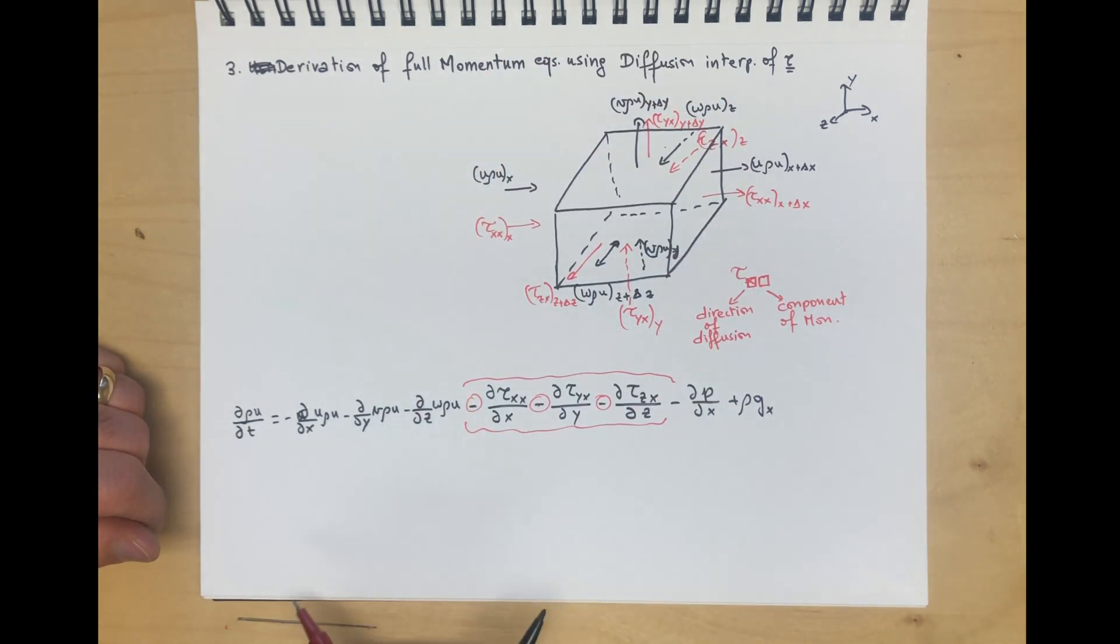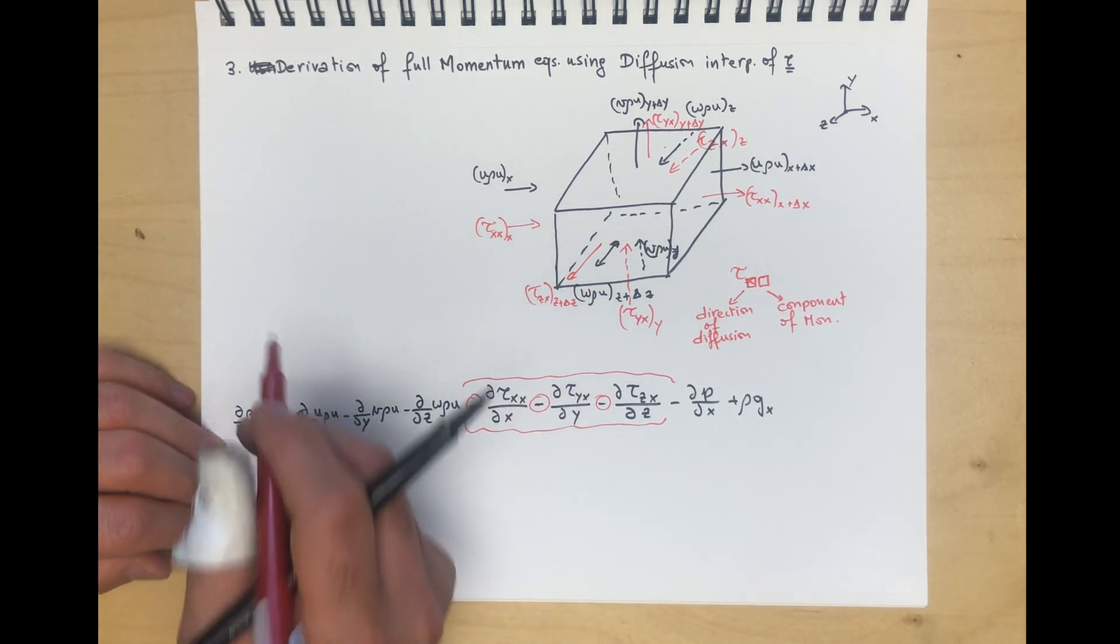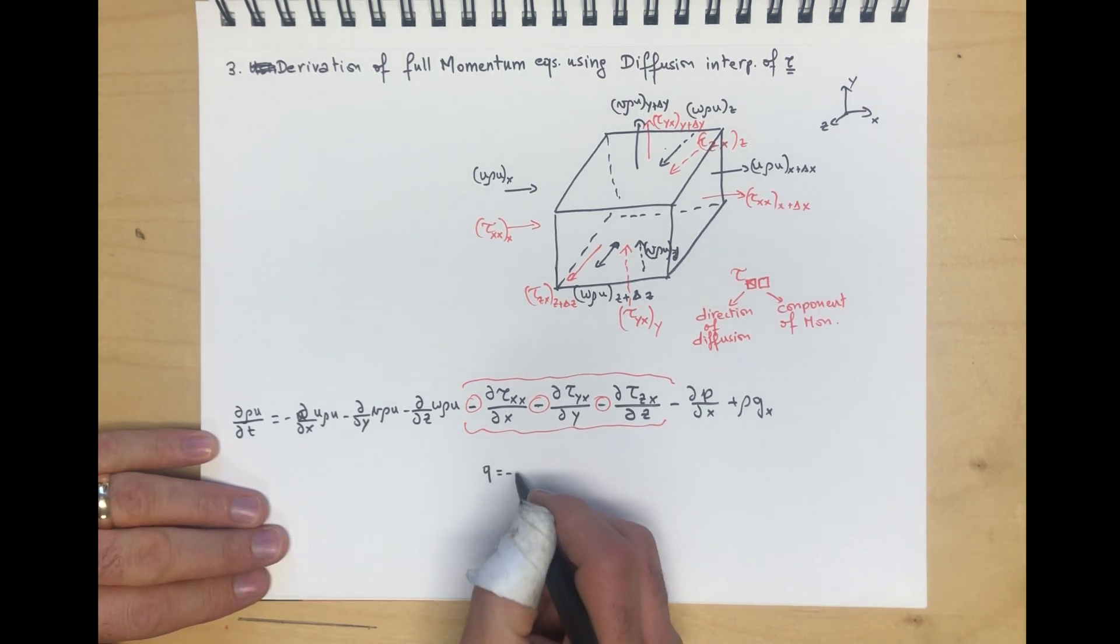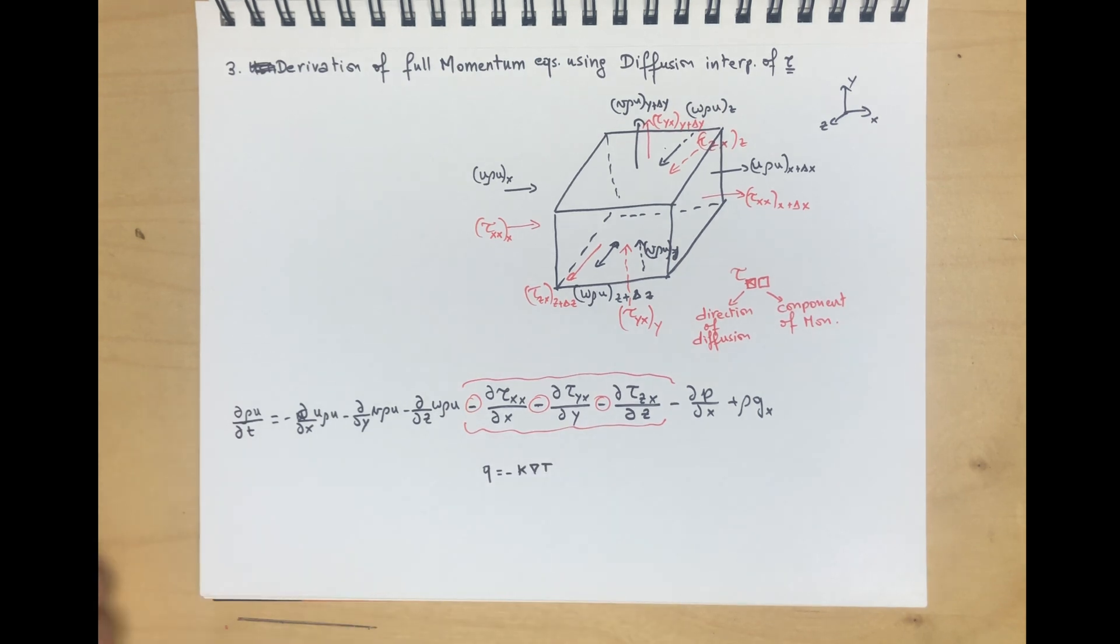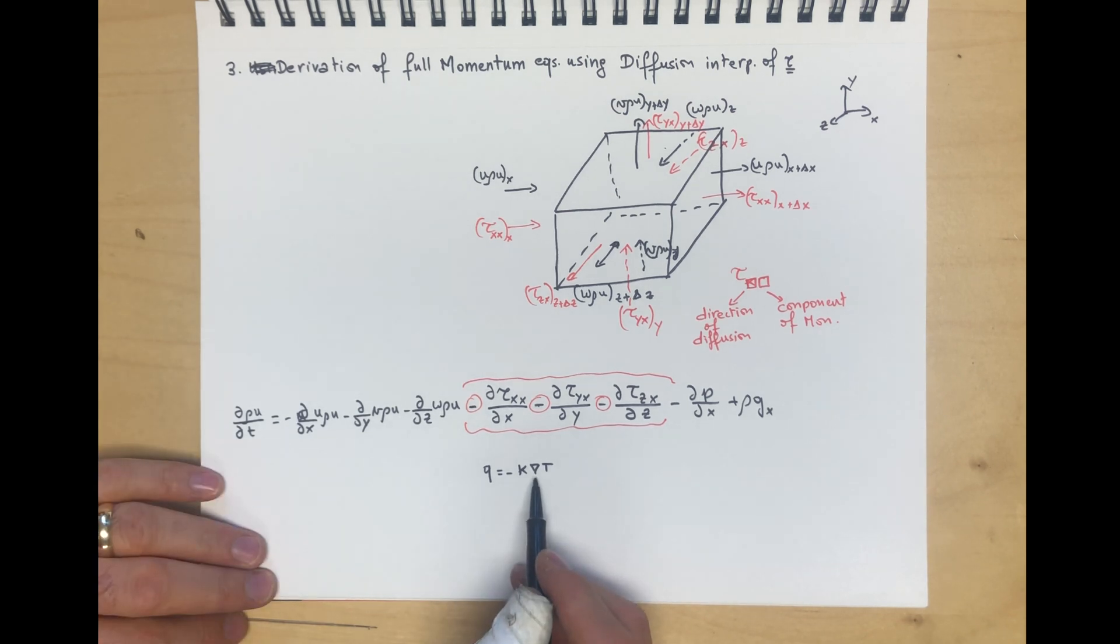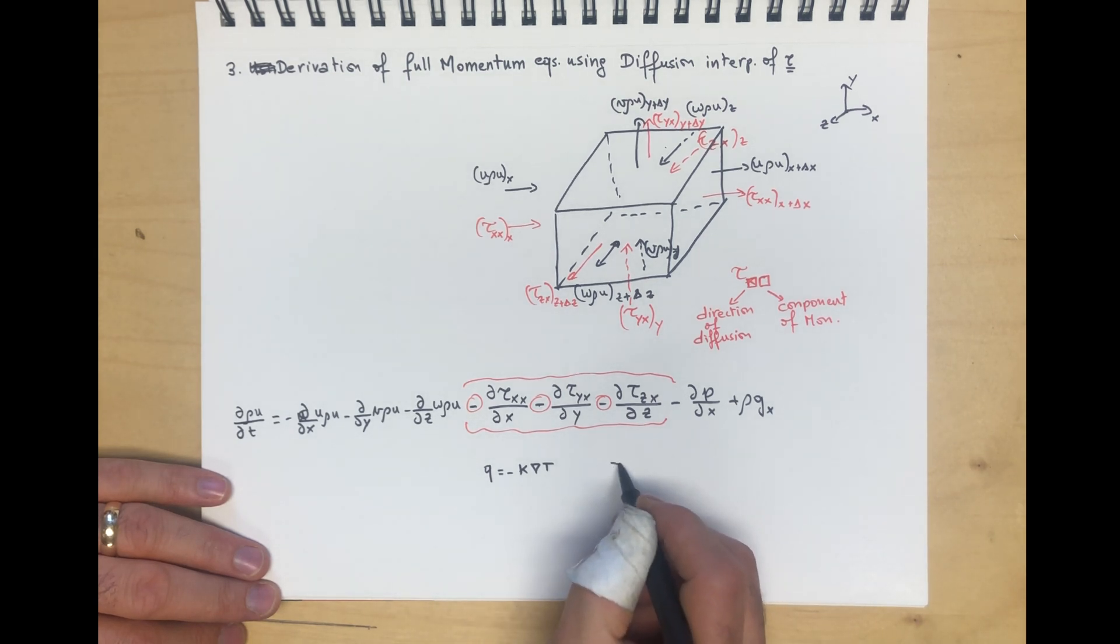If you think of the diffusive flux for temperature, the heat flux, we have minus k grad T. Heat flows from high to low temperature, giving this negative slope. The same way, in diffusion, momentum diffuses from high values to low values.